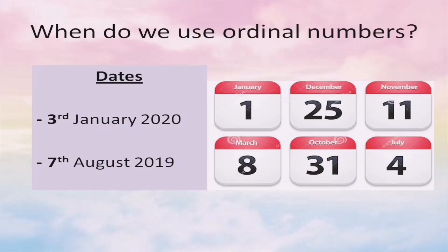When do we usually use ordinal numbers? First, we use them to tell dates. For example, if you want to say '3 January 2020,' you don't say it as 'three' — you say it as '3rd January 2020.' What about '7 August 2019'? You say it as '7th August 2019.'